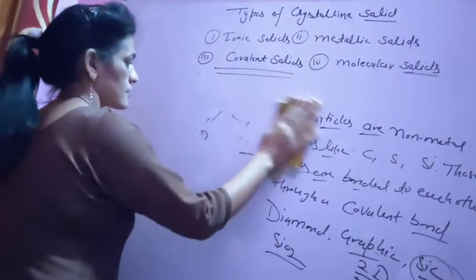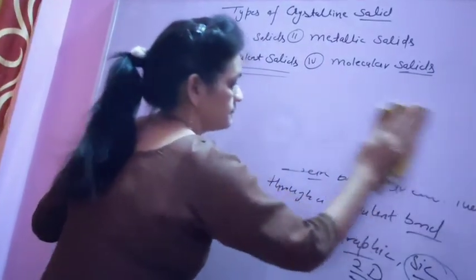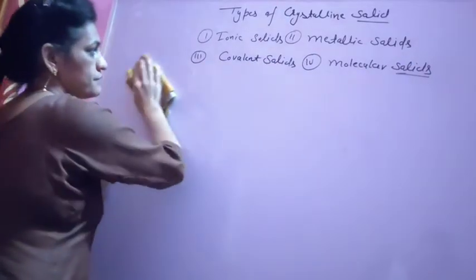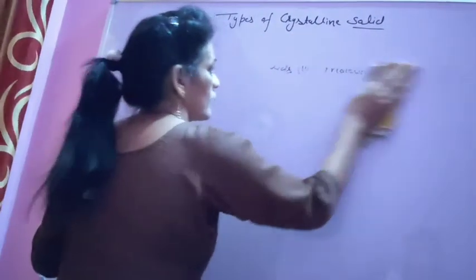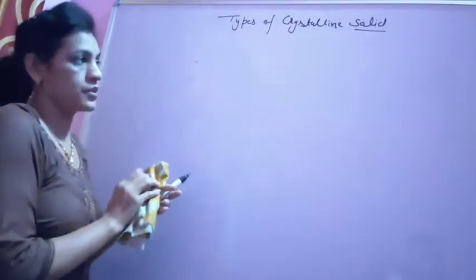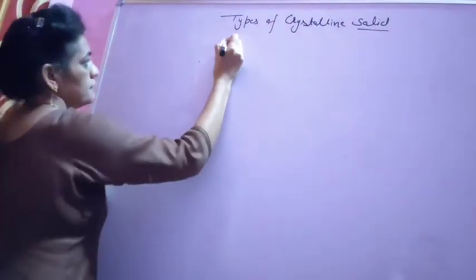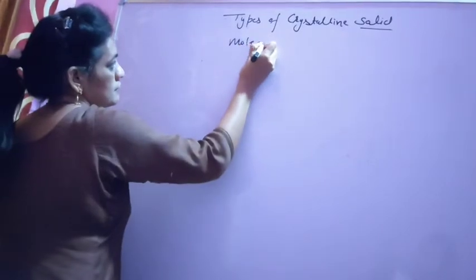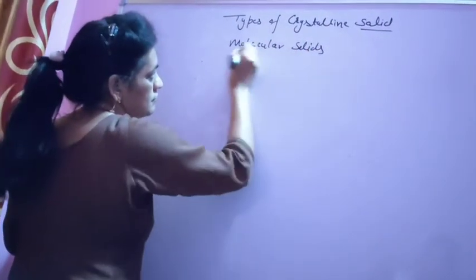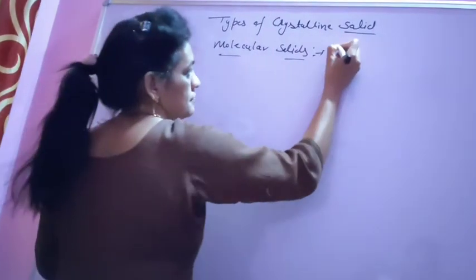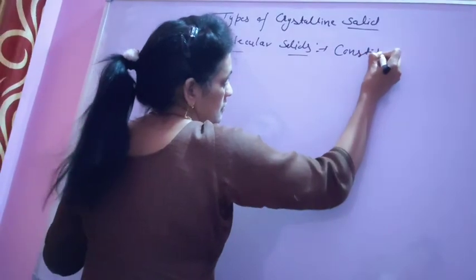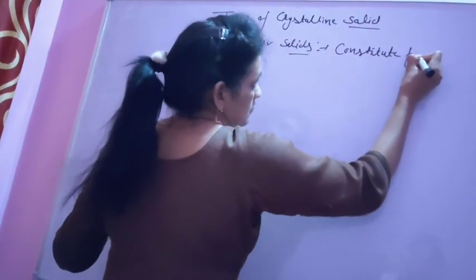After covalent solids, the fourth type is molecular solids. The constituent particles of molecular solids are either molecules or atoms.